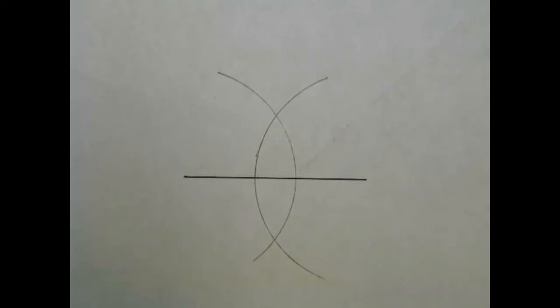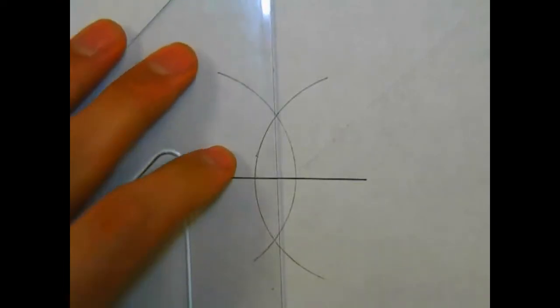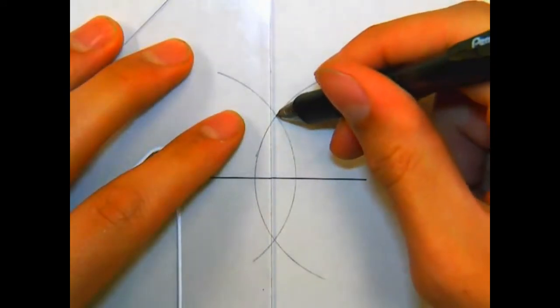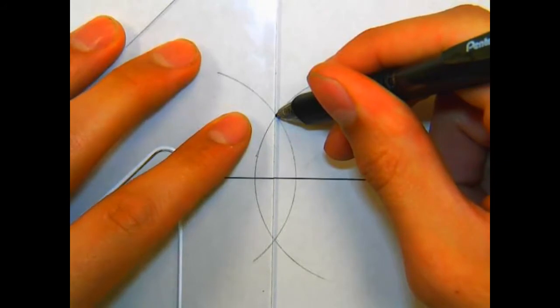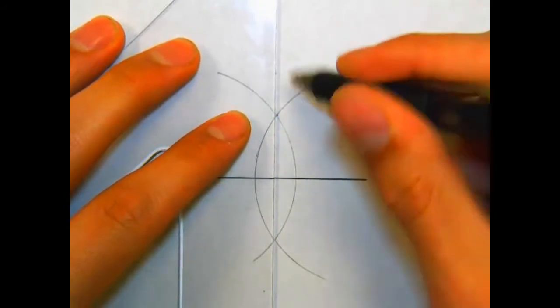With those two arcs, we're going to find the two intersection points. At those two intersection points, we'll take a straight edge and draw a line, a construction line, through the two intersection points.